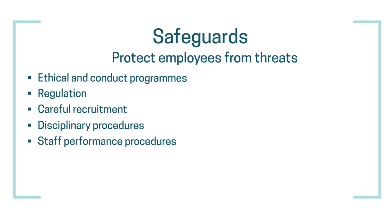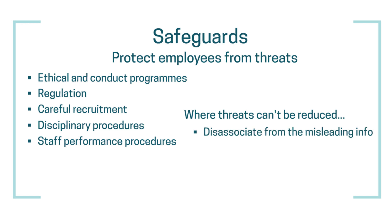Having these safeguards in place is all well and good, but unfortunately there are some instances where it's not possible to reduce the threat to an acceptable level. In such situations, the accountant should refuse to remain associated with any information they believe to be misleading. For example, if an accountant has been unknowingly associated with misleading information — perhaps by basing a set of reports on a fabricated data set provided by another colleague — once they become aware of this, they'll need to take steps to be disassociated from that information, as well as deciding whether there is a requirement to report the issue, perhaps even by considering legal advice.